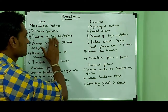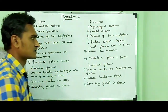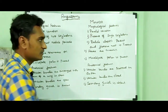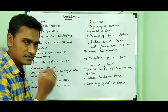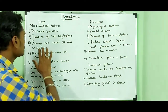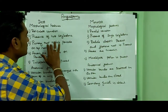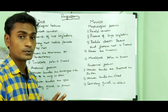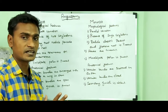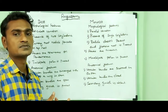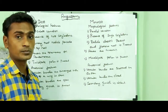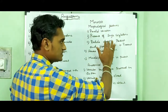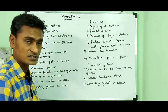Dicots have two cotyledons, and monocots have a single cotyledon. In dicots, two cotyledons give rise to the plumule and radicle. In monocots, a single cotyledon gives rise to the radicle and plumule. In dicots, the radicle persists and develops into a tap root. In monocots, the radicle does not persist and instead produces a fibrous root system.